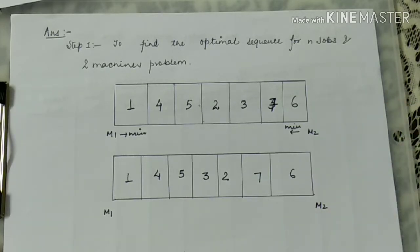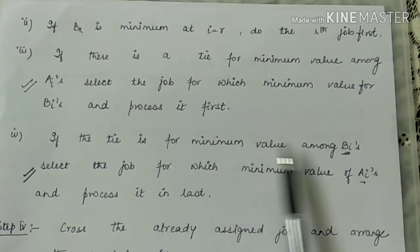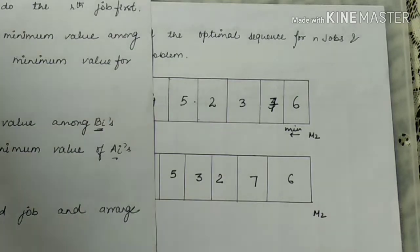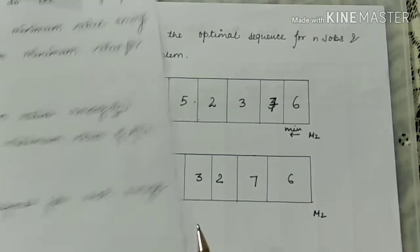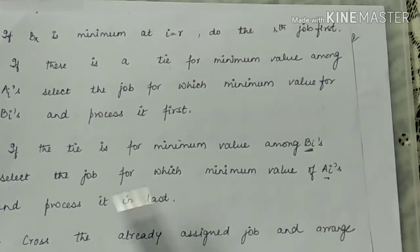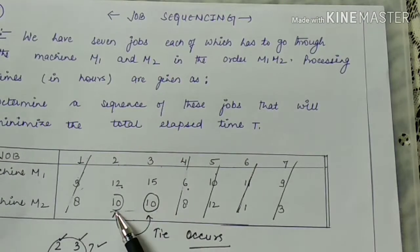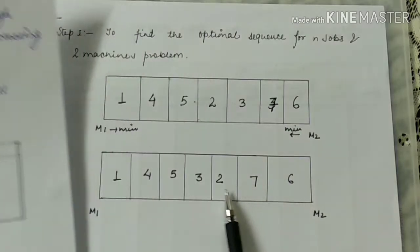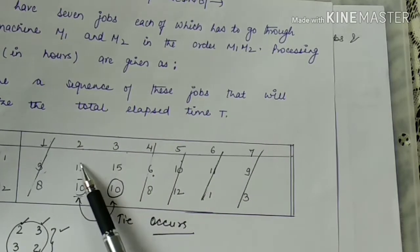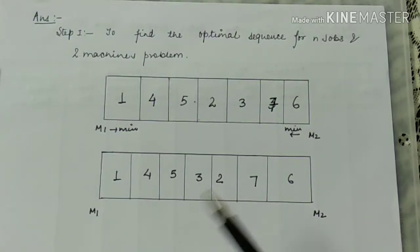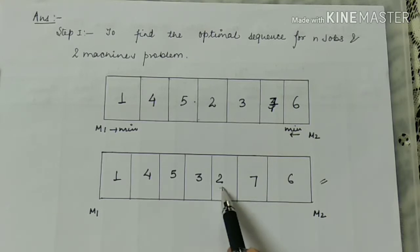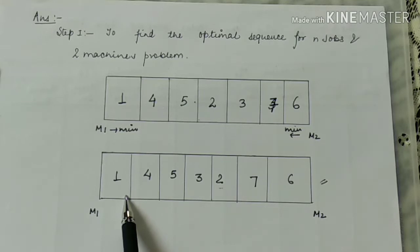In Johnson's method, it is stated: if the tie is for the minimum value among the B (M2) values, select the job for which the minimum value of A (M1) is and process it last. The tie occurred in the B values. Job 2 has minimum A value of 12, so we process it last. Job 3 takes more time than job 2 on M1, so job 3 is processed before job 2. Therefore this sequence — with 3 before 2 — is the optimal sequence.